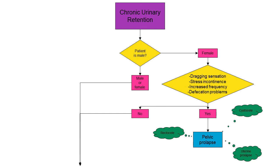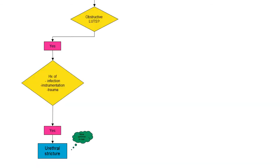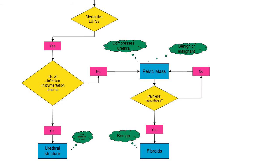If they don't have those symptoms, we move on to causes that can apply to either men or women. Do they have obstructive lower urinary tract symptoms? Yes. Do they have a history of infection, instrumentation, or trauma? If yes, we can consider urethral strictures, which are more common in men than women. If no, we consider a pelvic mass — benign or malignant — causing external compression of the urethra. If the patient is female with painless menorrhagia, we can consider fibroids, which is benign.